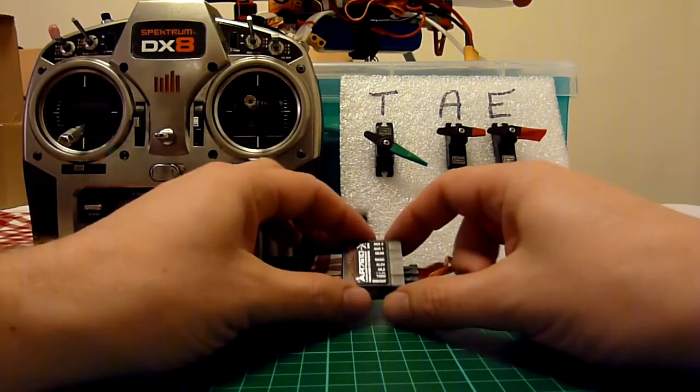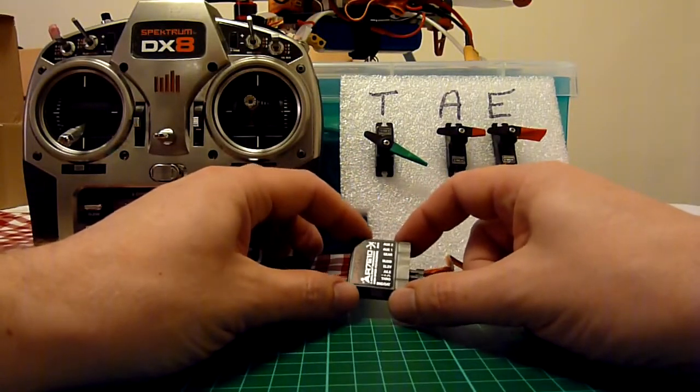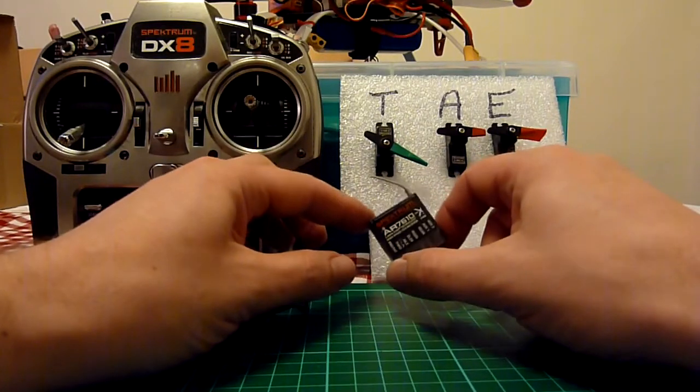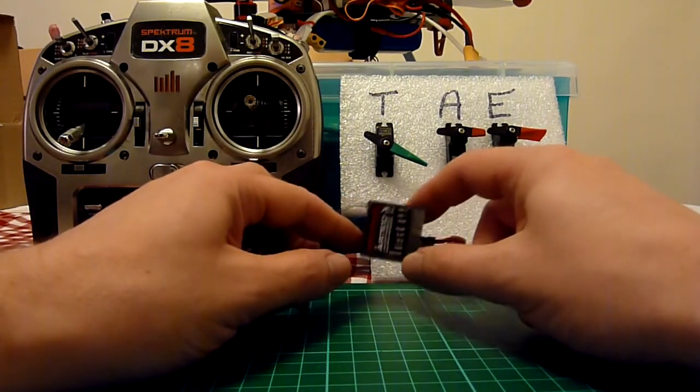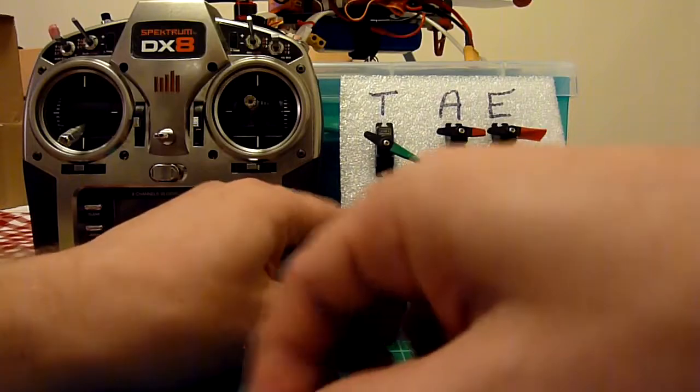I wanted to do a quick video just explaining the different types of bind: the hold versus a preset bind. This is a Spectrum AR7610 receiver which does both, so I can demonstrate that.